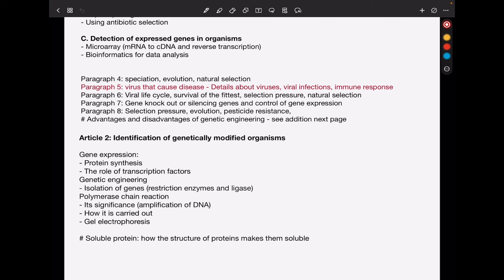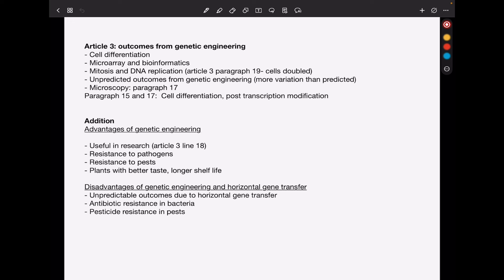From Article 3, they are focusing on outcomes from genetic engineering. So here we expect maybe questions on cell differentiation and changing how they function. We can also talk about microarray and bioinformatics. In Paragraph 19, they talked about cells doubling, so a question about mitosis and DNA replication could be asked. And again, this is a long shot. They could ask questions about the unpredicted outcomes from genetic engineering. An example they used was more variations than predicted. Of course, this could be a question where you have to think in different scenarios, based on the outcomes being good or bad.